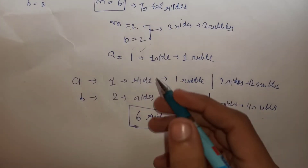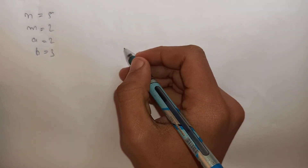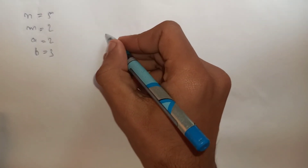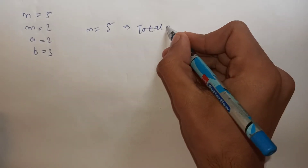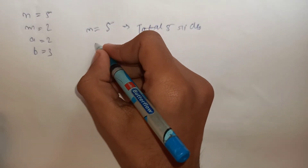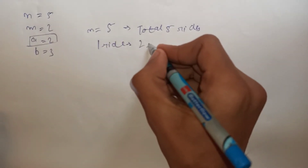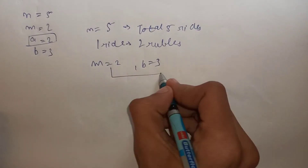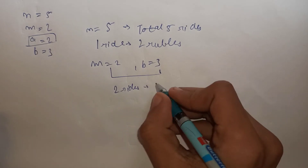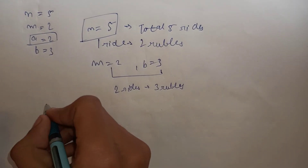Now let's look at another sample test case. We have N=5, so we have to do 5 rides total. A=2, so one ride costs 2 rubbles. M=2 and B=3, which means for 2 rides we spend 3 rubbles. We need to find the minimum rubbles for 5 rides. There are two cases to consider here.